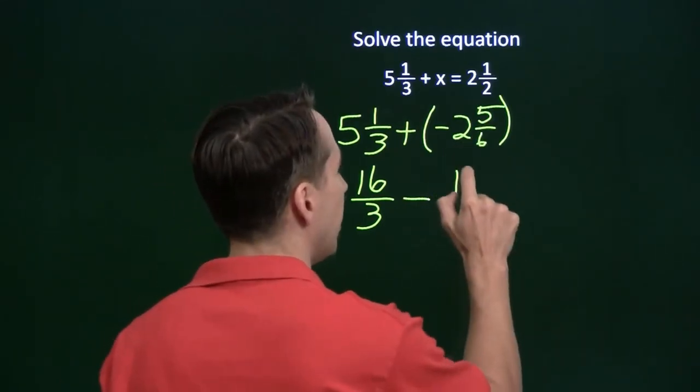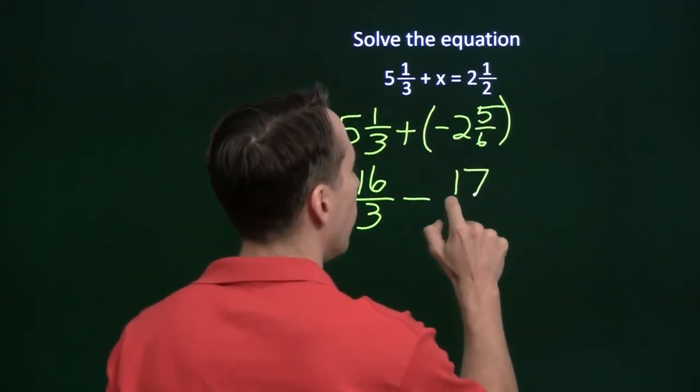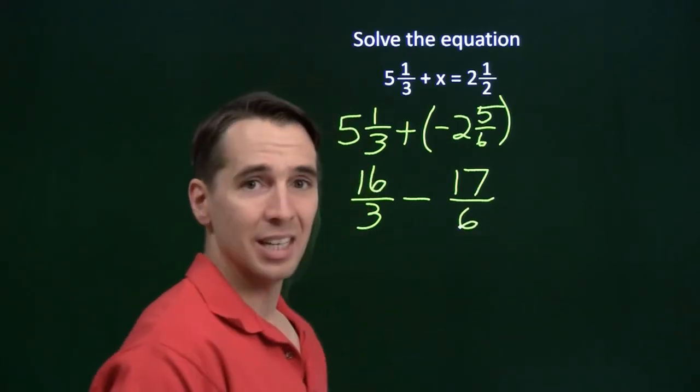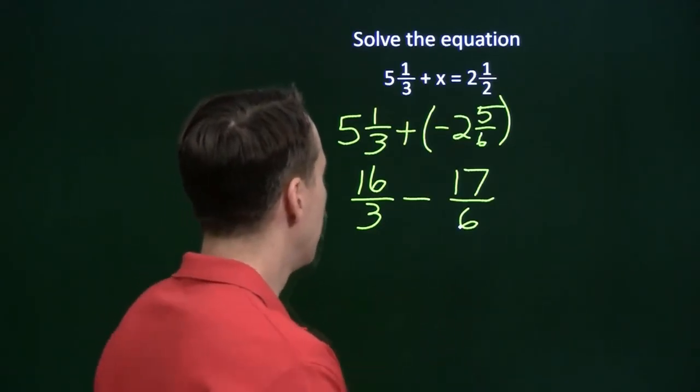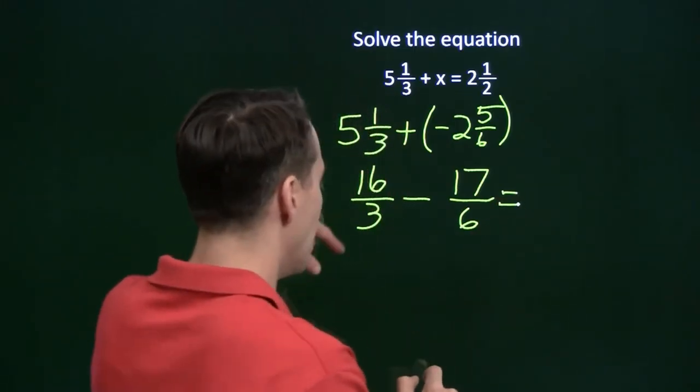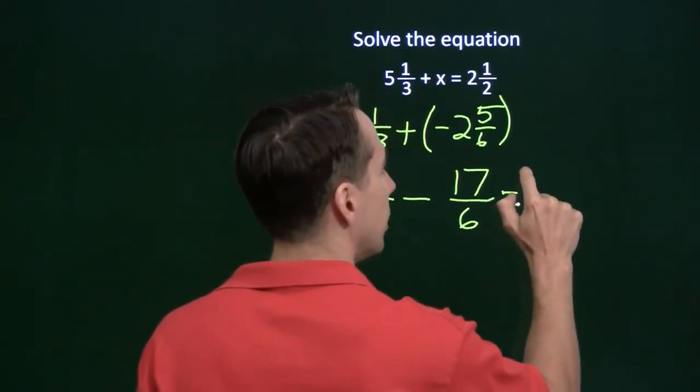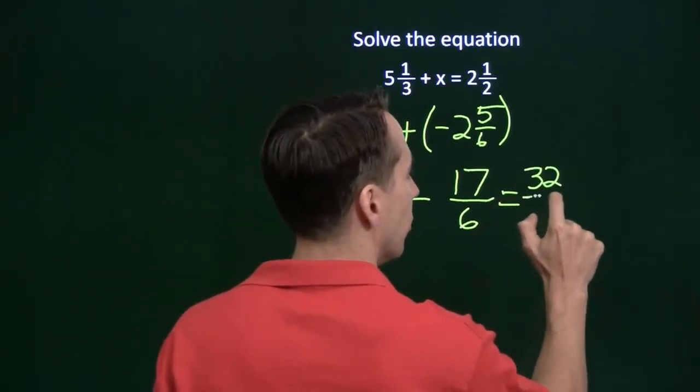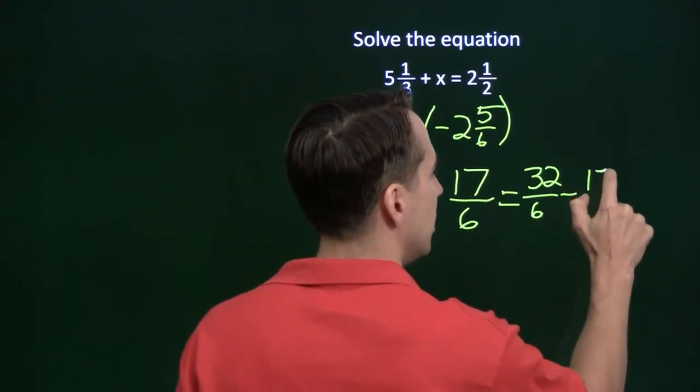The 2 and 5 sixths, well, we know what that is. That from before we know is just 17 sixths. Now, we need to find the common denominator, and it's pretty easy. It's just 6. So we double the top and bottom here, and we get 32 over 6 minus 17 over 6.